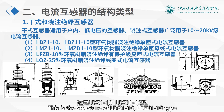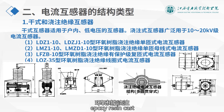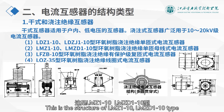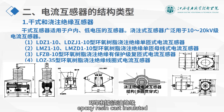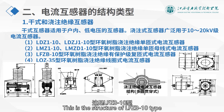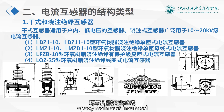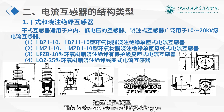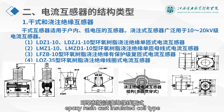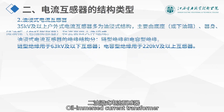This is the structure of the LDZ1-10 and LDZJ1-10 type epoxy resin cast insulated single-turn current transformer. This is the structure of the LMZY-10 and LMZD1-10 type epoxy resin cast insulated single-turn bus type current transformer. This is the structure of the LFZB-10 type epoxy resin cast insulated multi-turn current transformer with protection grade. This is the structure of the LQZ35 type epoxy resin cast insulated core U-type current transformer.